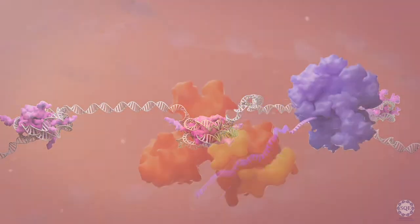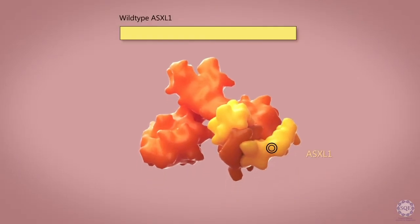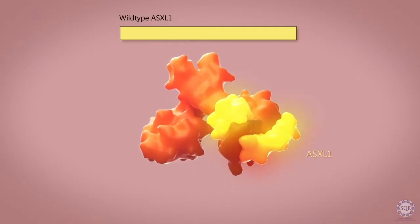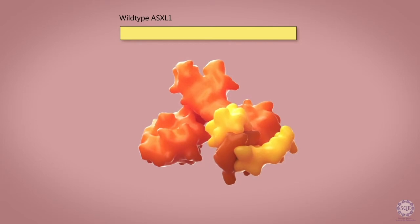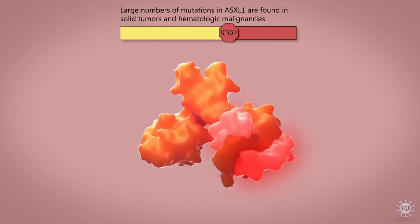BAP1 contains a core subunit called ASXL1. Mutated ASXL1 contains a stop codon.